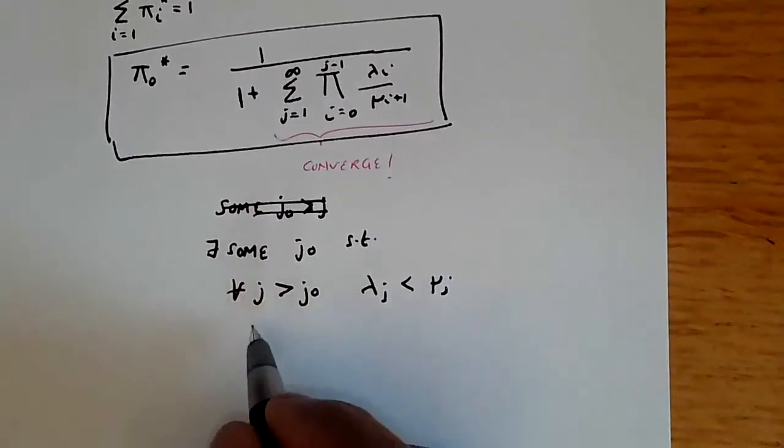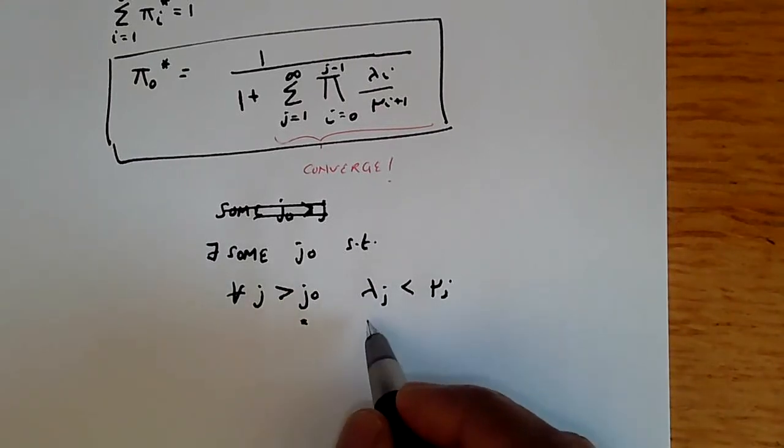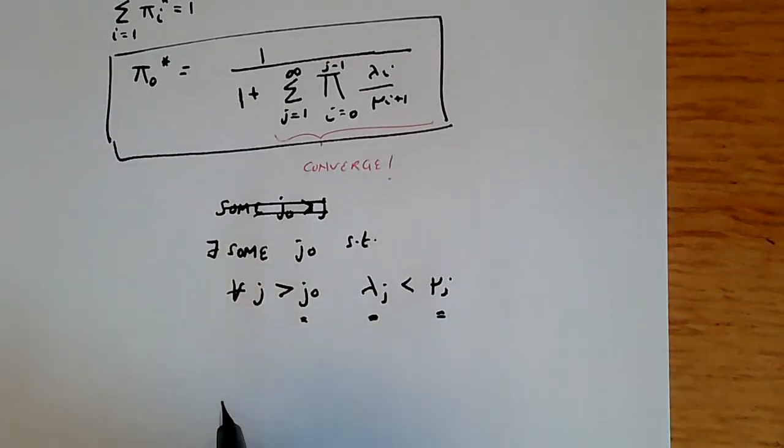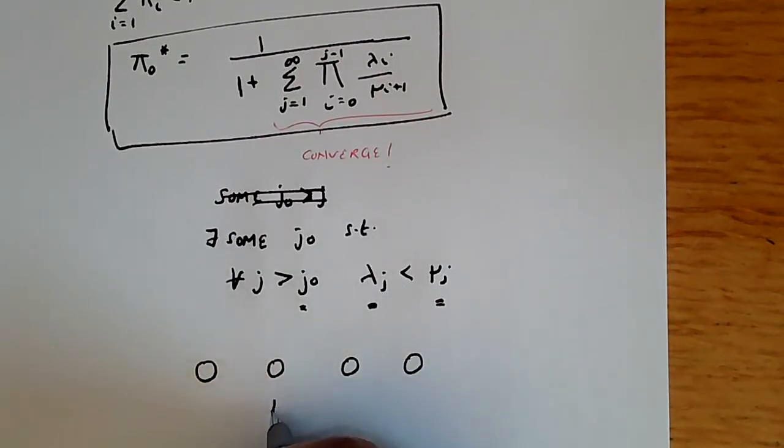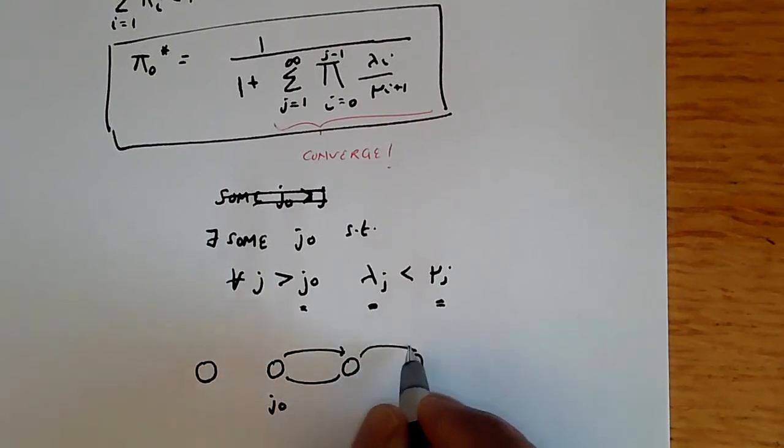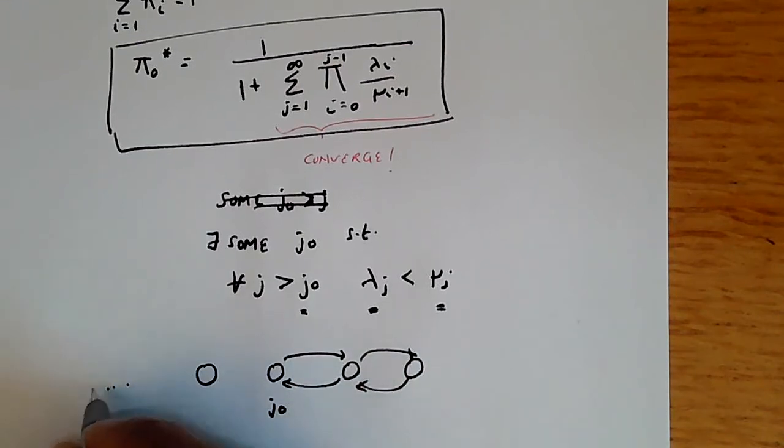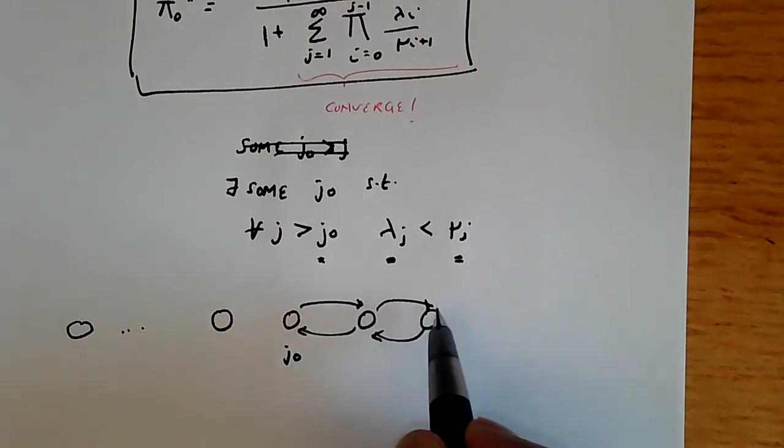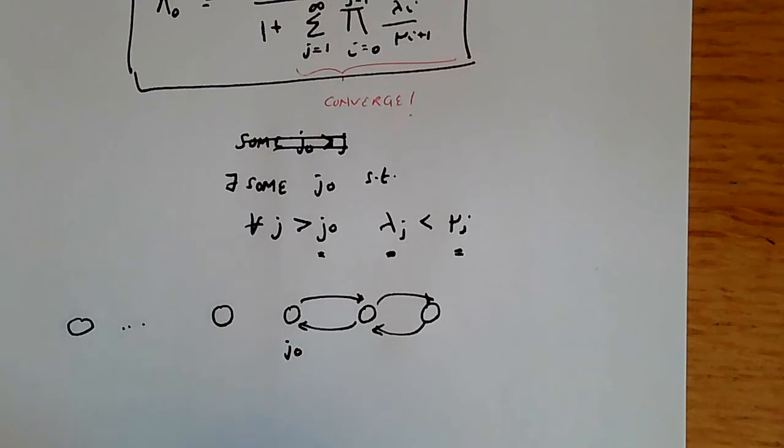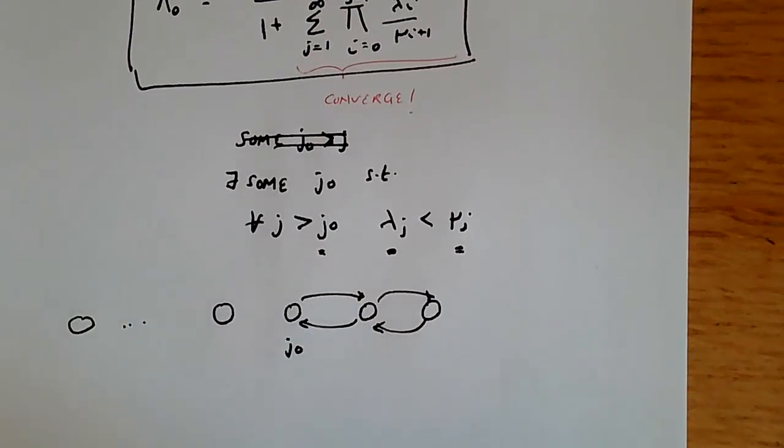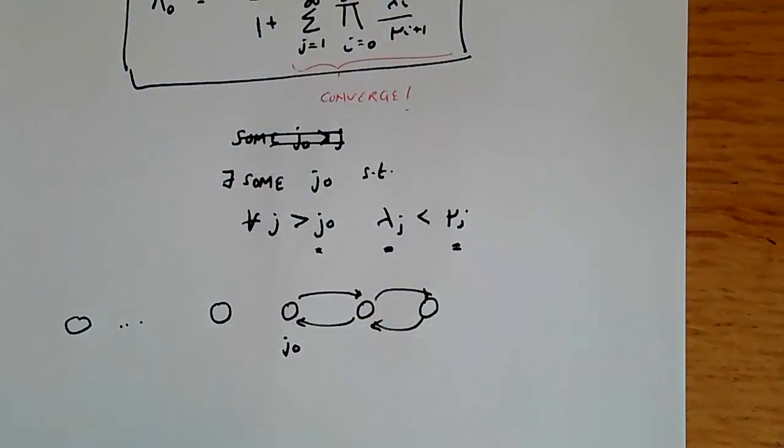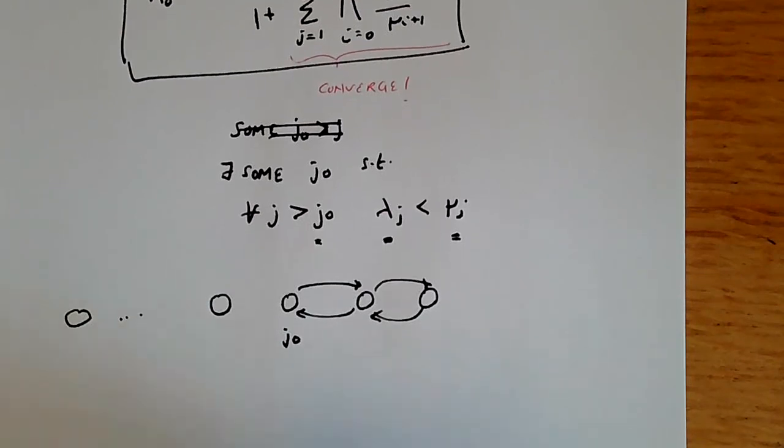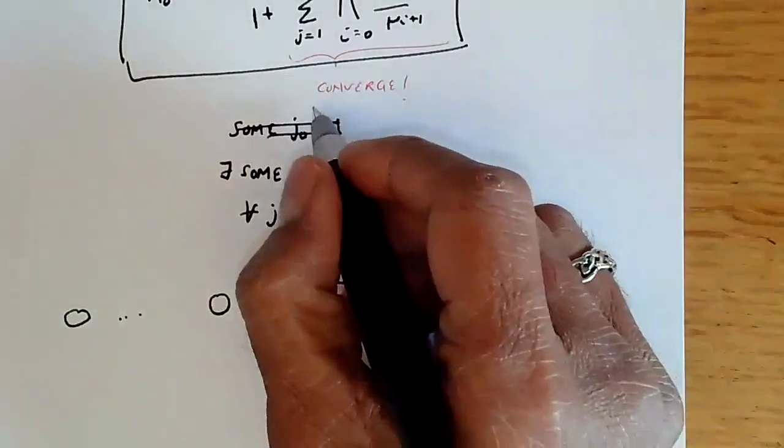What does this mean? It means that once we get to the state j₀, all arrival rates are less than service rates. If we draw it like this, we have some chain and if we get to some value, this is state j₀. Then after that, we must always have the transition rates to return down towards zero, towards state zero, to be higher than the rates at which you're going up. So you're pulling the queue back down, the population size back down towards zero. Otherwise the queue gets unbounded, and if the queue gets unbounded, we will not get convergence of this term. In fact, π₀* becomes undefined. So the convergence problem of a birth-death process is reflected exactly in the convergence of this sum.